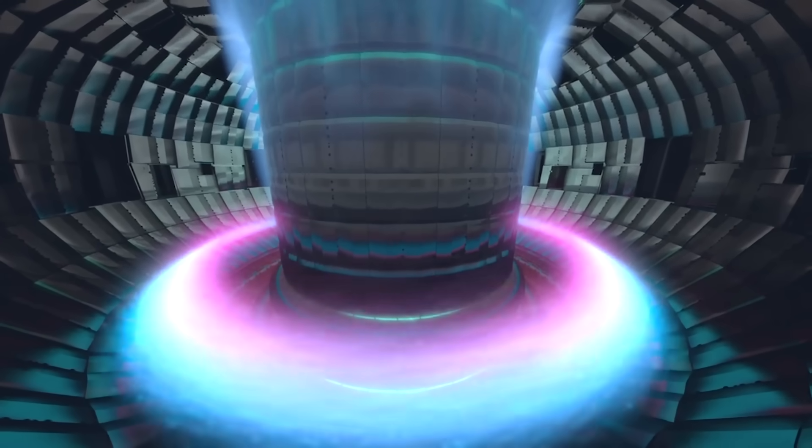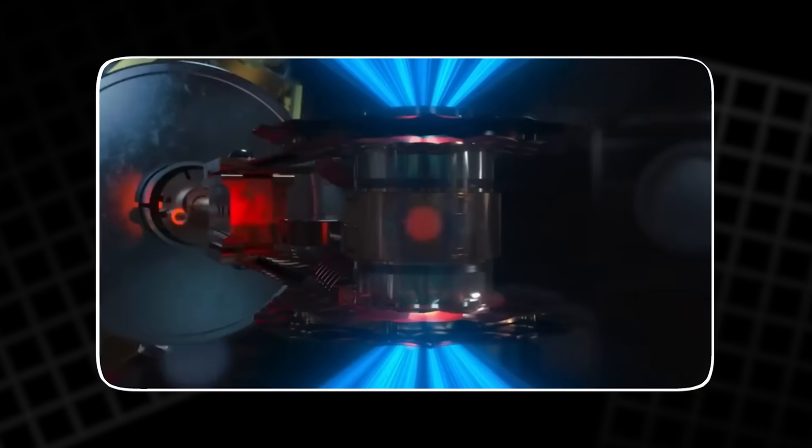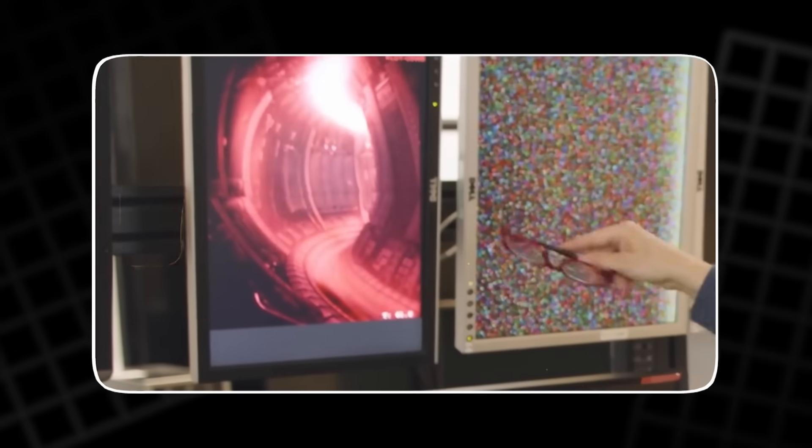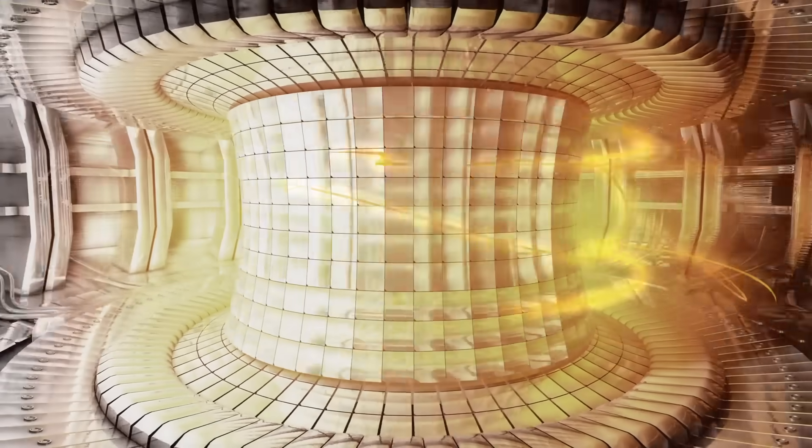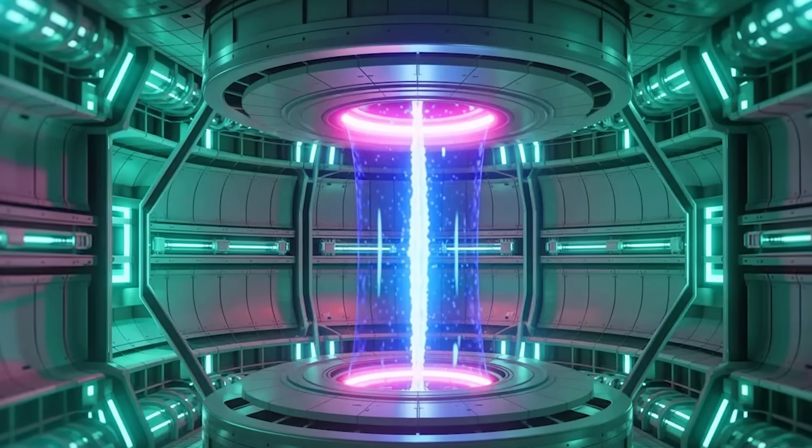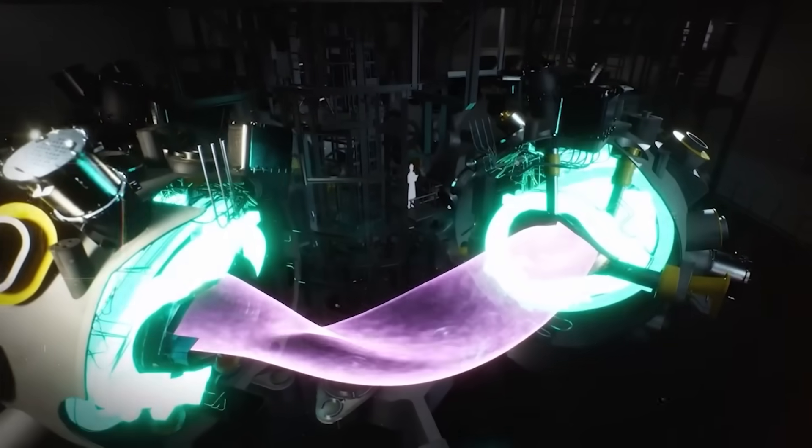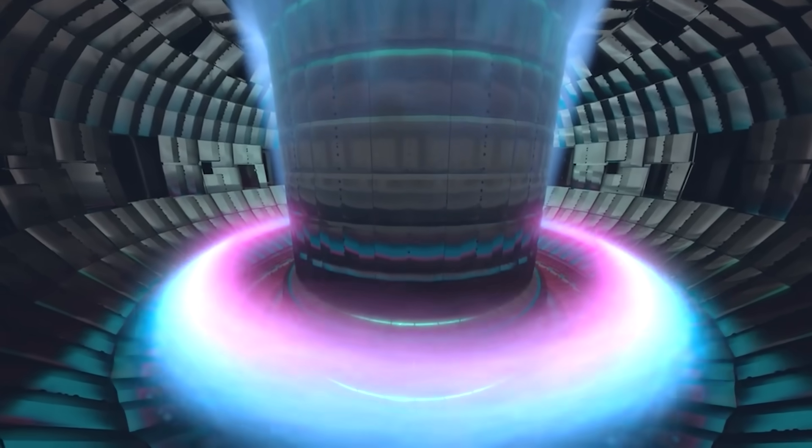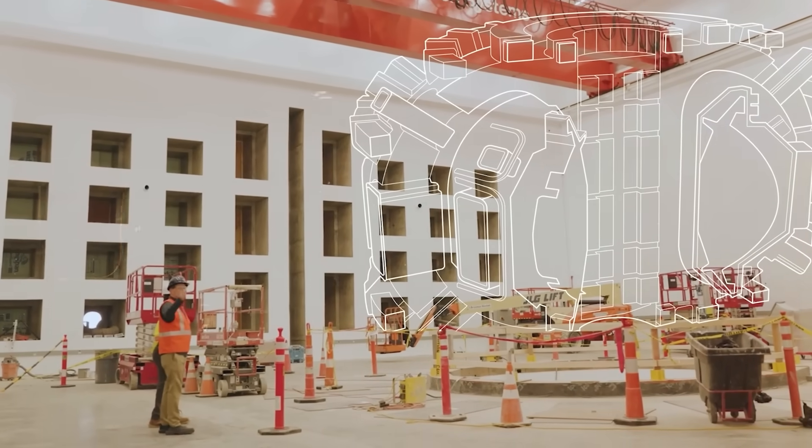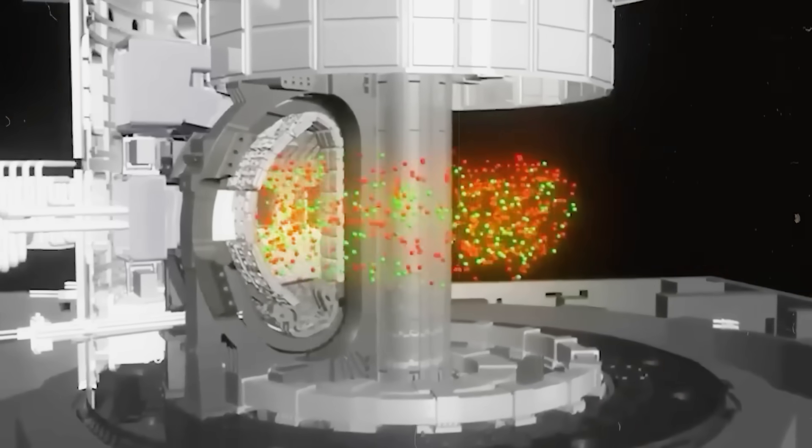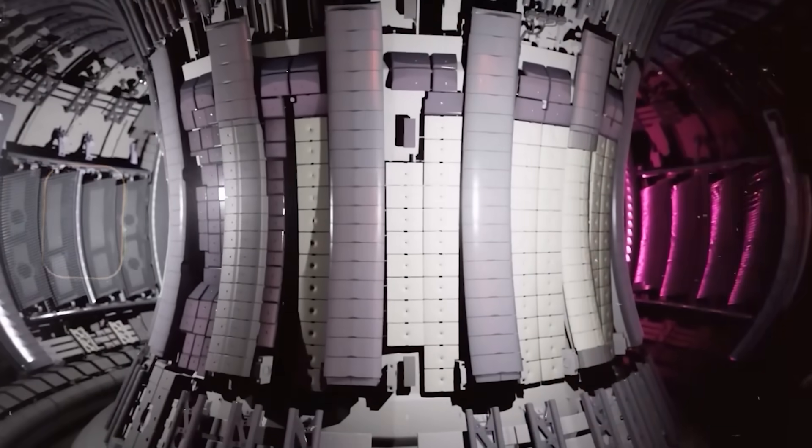Fusion also looks different from fission in terms of safety. A fusion plasma holds only a few grams of fuel at any moment. If the magnets fail, the plasma hits the wall, cools instantly, and the reaction stops. There is no chain reaction to run away. Waste exists, but it is mostly in the materials around the plasma that get activated by neutrons. The goal is to use materials that decay to much lower levels within decades, roughly 50 to 100 years, instead of the multi-thousand-year timelines people fear from fission waste. And because the fuel cycle is different, fusion does not fit the classic weapons pathway that drives so much political resistance.